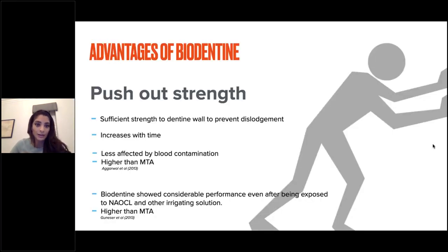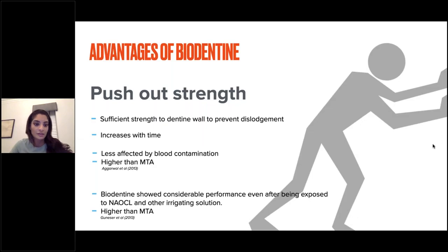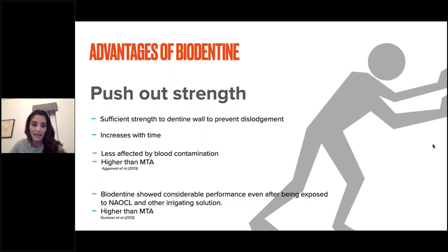The push-out strength of Biodentine is an important property for perforation repairs — the material must have sufficient strength to prevent dislodgement. Like many of its properties, push-out strength increases with time. Studies show it is slightly less affected by blood contamination than MTA, and most studies show it has a slightly higher push-out strength compared to MTA. Once it has had its initial set, sodium hypochlorite and other irrigating solutions can be used on it without causing significant problems.